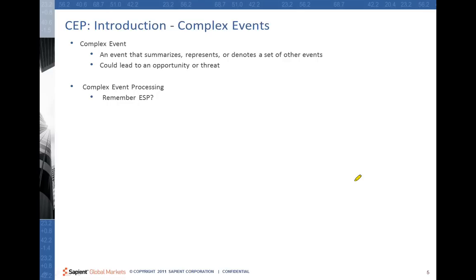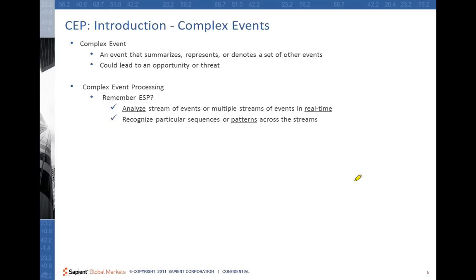Moving on to complex event processing, it's very much similar to what we saw in event stream processing — ESP. Think of CEP as a subset of ESP. The steps would be the same or similar at least. You would analyze the stream of events, or multiple streams of events, in real time. Then you would recognize particular sequences or patterns across these streams, and infer a business-significant event from the correlated events.